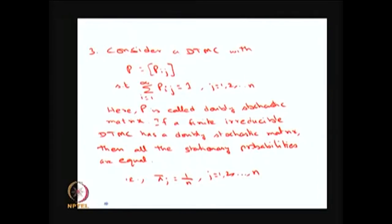In the third example, I am considering a discrete time Markov chain — specifically a time-homogeneous discrete time Markov chain whose one-step transition probability matrix satisfies the additional condition that the column sums are also equal to one. A stochastic matrix means the row sums are one, and here the additional condition is that the column sum is also one for a finite Markov chain.